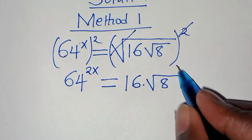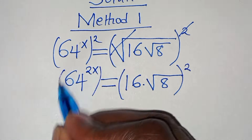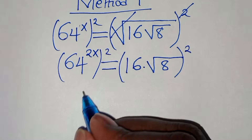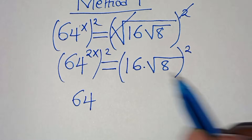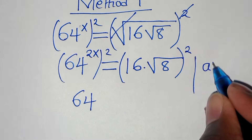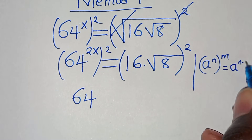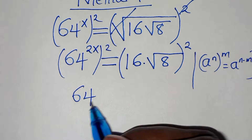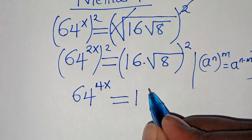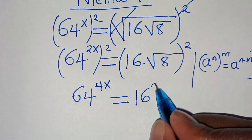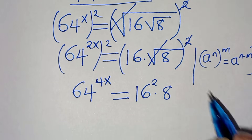The next step is to square both sides again. This gives us 64 raised to the power of 2x times 2. Using the rule a to the power of n raised to the power of m equals a to the power of n times m, we get 64 to the power of 4x, equal to 16 squared times 8, after eliminating the remaining square root sign.